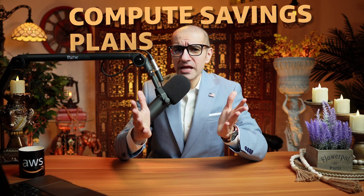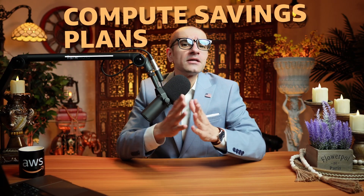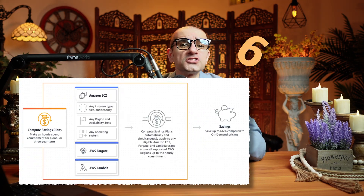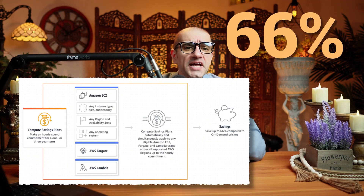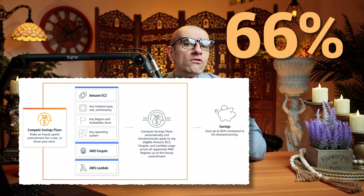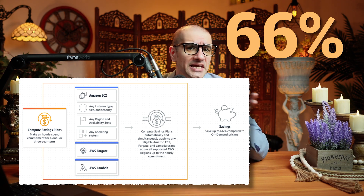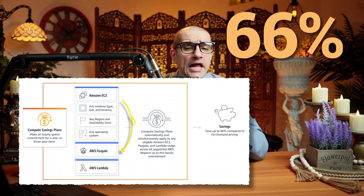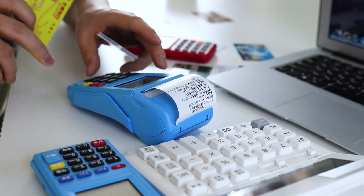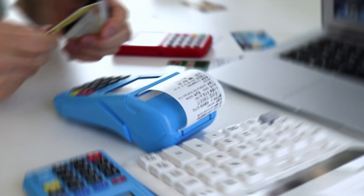Number 2. Compute savings plans provide the most flexibility and can reduce your costs by up to 66%. Within these plans, you can move a workload from EC2 to Fargate or Lambda at any time and still continue to pay the savings plans price.